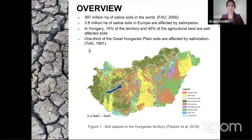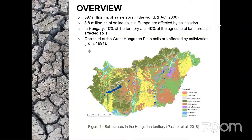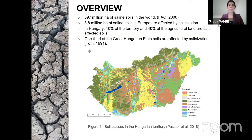Soil salinization is the accumulation of salt in the soil when the evaporation rate exceeds the precipitation rate. It is one of the major degradation forms in the world, especially in arid and semi-arid climates. According to the FAO, around 397 million hectares are affected by salinization globally, around 3.8 million hectares in Europe, and in Hungary around 10% of the territory and 40% of agricultural lands are salt-affected. The Great Hungarian Plain already has one third of its territory affected by salinization.